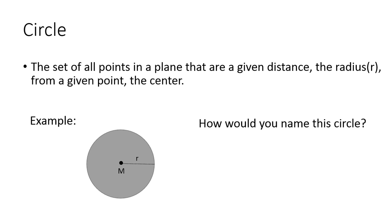Okay, and last, we have a circle. A circle is a set of all points in a plane that are a given distance. The radius r, I labeled it in the circle below in the example from a given point, the center. The center of the circle would be M. So how would you name this circle? It's pretty simple. You just name it by its center point. So the name of the circle would be circle M.